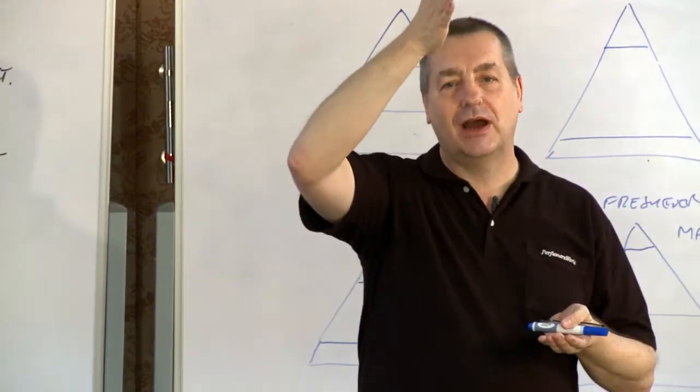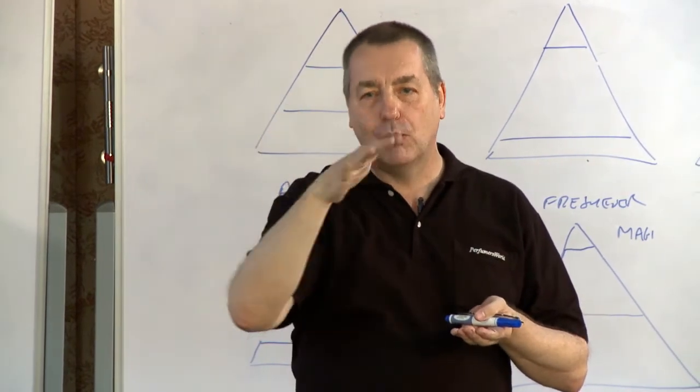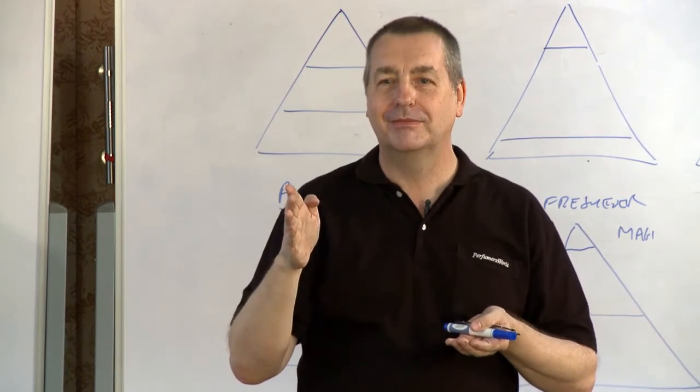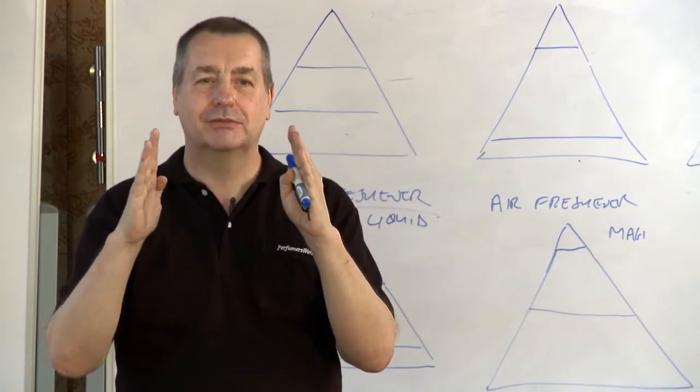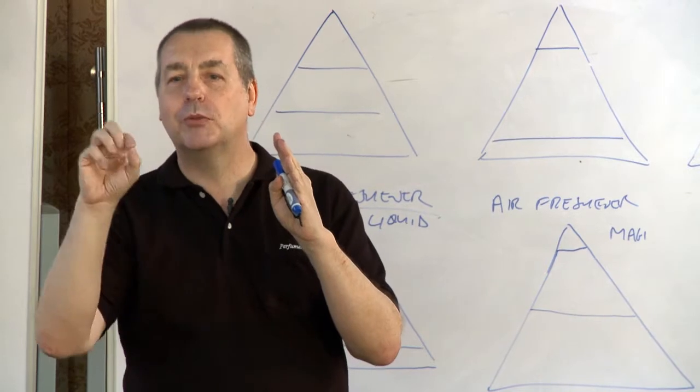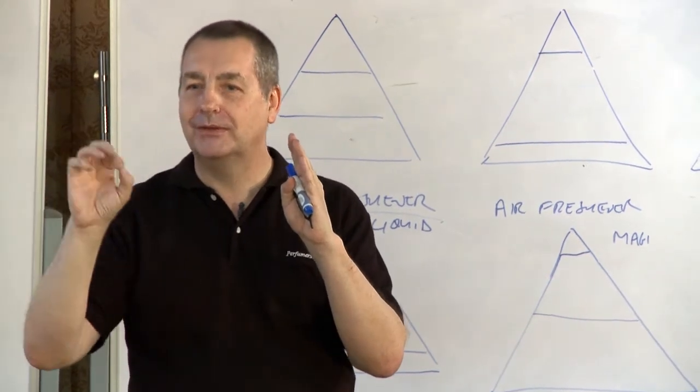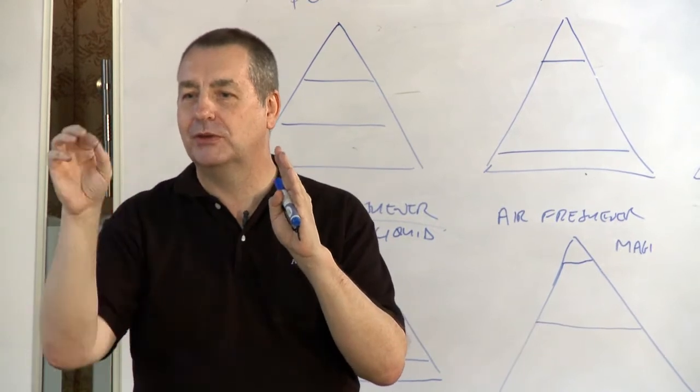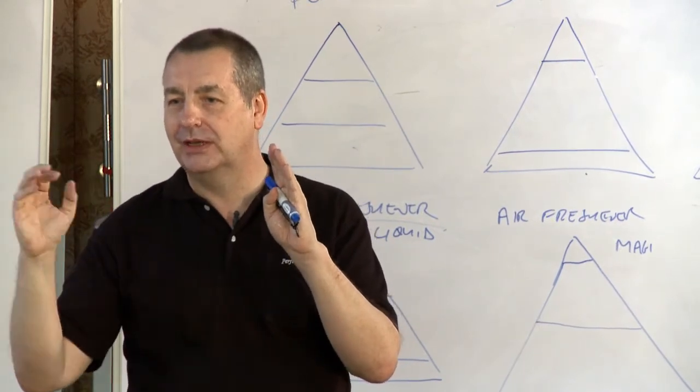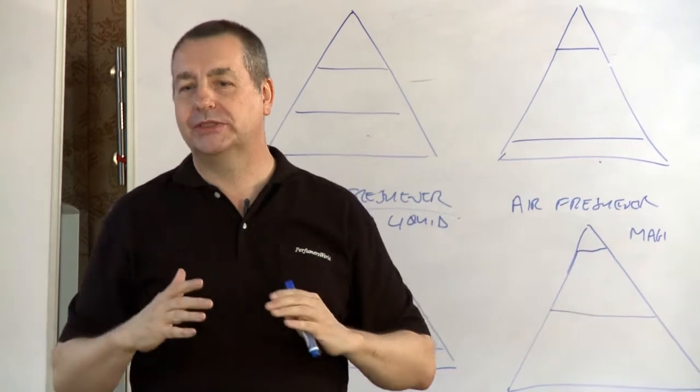So if you get this feeling that there's a hole in your perfume, maybe all you need to do is to expand the middle notes. Times them all by 1.2. So you had 10 drops, you usually put 12 drops in. With 20 drops, you'd put 24 drops in. And that sort of fills it back out again.